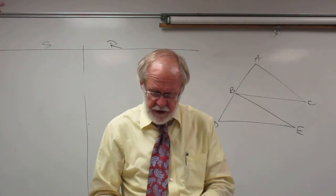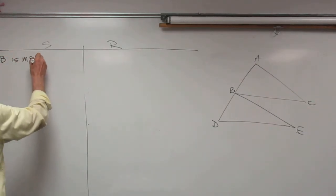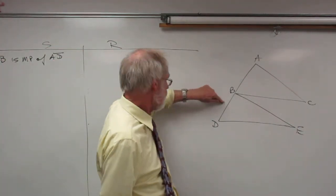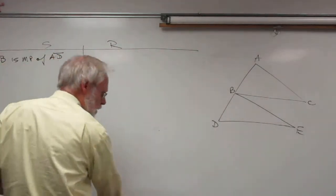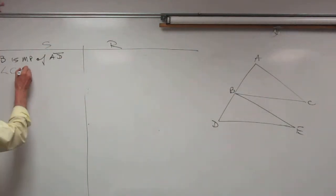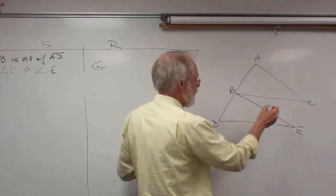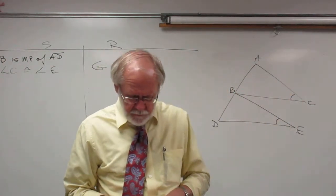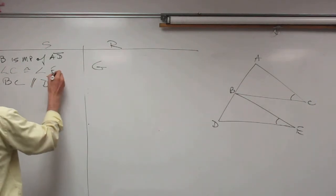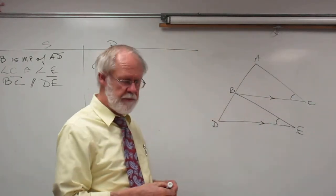The given information is: B is the midpoint of AD — that will let us say AB is congruent to BD. We are also given angle C is congruent to angle E, and BC is parallel to DE. So this side is parallel to this side, which will be an important piece of information.